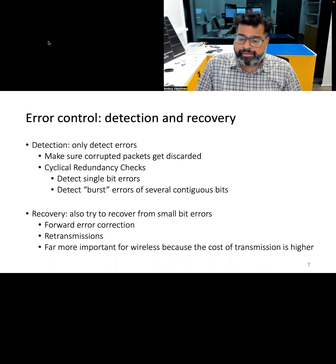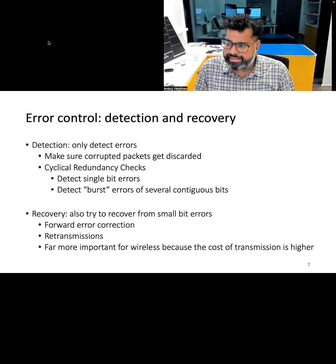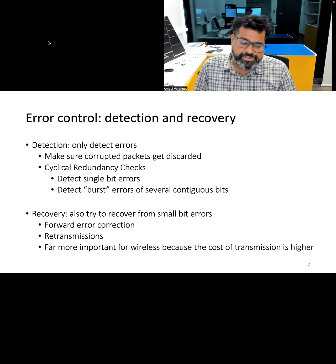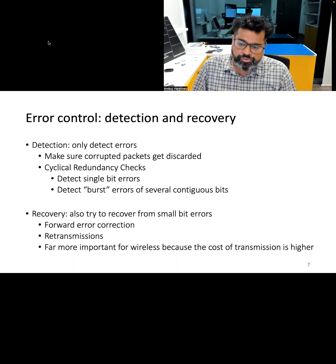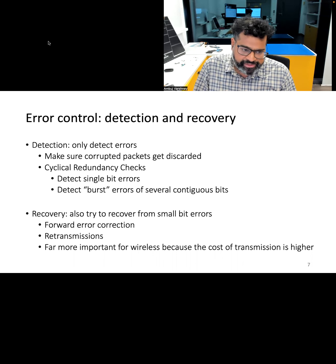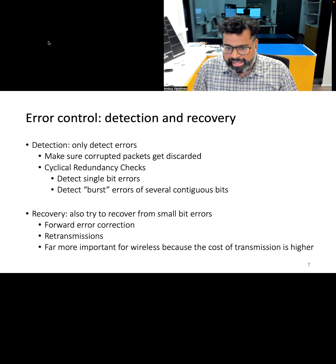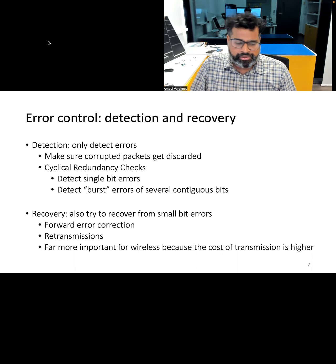The data link layer performs error control, which involves detecting errors — especially important in low-power wireless communication where transmissions may introduce significant errors. Tasks include detecting errors and discarding corrupted packets, performing CRC checks to detect single-bit or burst errors. Once errors are detected, the next tasks include retransmission, correcting errors, or employing mechanisms to recover corrupted bits.